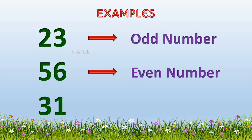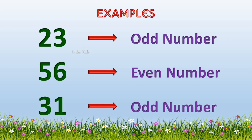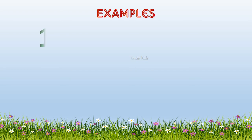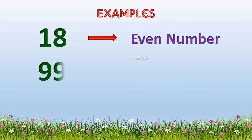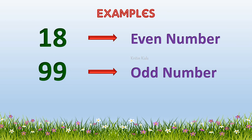Let's take another example: 31. Here we can see one. One is an odd number, so 31 becomes an odd number. Let's see this example: 18. It is an even number. Likewise, 99 — in this case we have 9 in the unit place. Nine is an odd number, so 99 becomes an odd number.